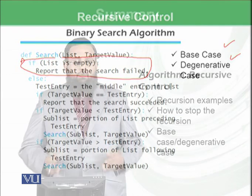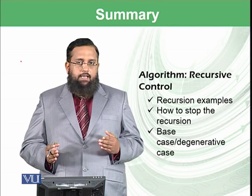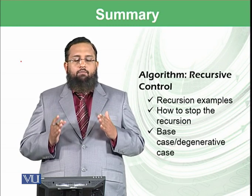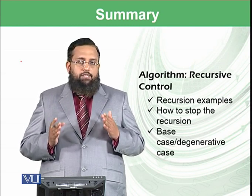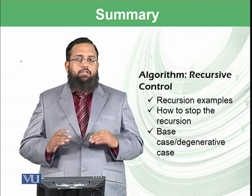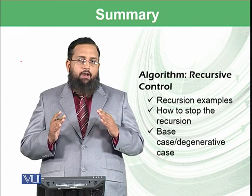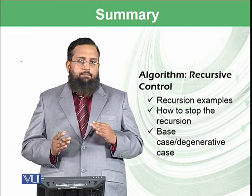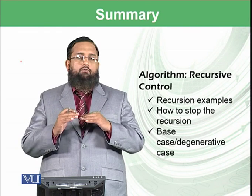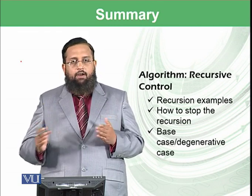To summarize today's module: we have learned in depth about recursion and seen how it can be controlled. When we define a function using recursion, the first statement of that function should be the base condition — some condition that terminates the function at a certain point. As we saw, when the list was empty the function was terminated. That base condition should be written at the top of the recursive function, and then it proceeds either to the left side or the right side and so on.